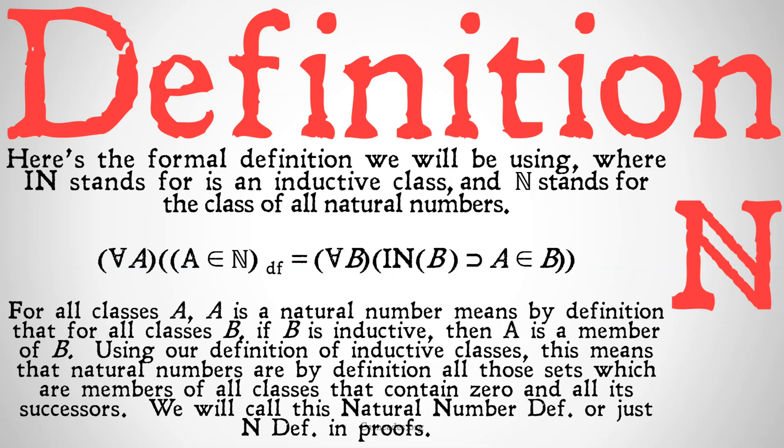Here's the formal definition we're going to be using, where IN stands for 'is an inductive class' and N with a bar in it stands for the class of all natural numbers. For all classes A, A is a member of N — by definition, it means that for all B, if B is inductive, then A is a member of B. In other words, for all classes A, A is a natural number means that for all classes B, if B is inductive, then A is a member of B. Using our definition of inductive classes, this means that natural numbers are, by definition, all those sets which are members of all classes that contain 0 and all its successors. We'll call this the natural numbers definition, or just NDEF in proofs.